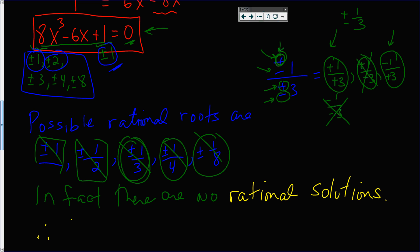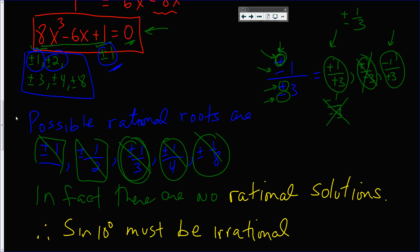Therefore, the sine of 10 degrees, which is a solution to this equation, is not rational — it must be irrational. That concludes the proof. If you like this video, leave me a comment. If you didn't like this video, leave me two comments. If there are any videos you'd like to see me make, just ask. Most of all, watch and learn. See you in the next video.